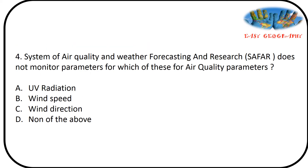Next question on SAFAR — System of Air Quality and Weather Forecasting and Research. Which air quality parameter does SAFAR not monitor? Options: UV radiation, wind speed, wind direction, none of the above. The SAFAR parameters include temperature, rainfall, humidity, wind speed, wind direction, UV radiation, and solar radiation — meaning all are monitored. The answer is option D, none of the above.